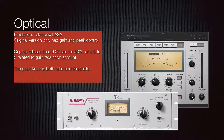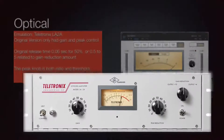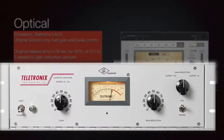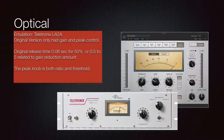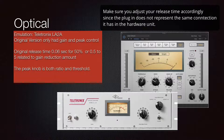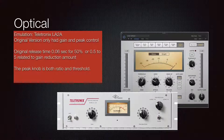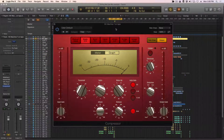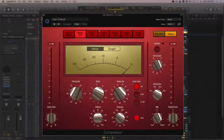The optical compressor is an emulation of the very expensive LA-2A — a hard-to-find and sought-after compressor because it is so smooth. As with all optical compressors, it's a little slow but reacts very smoothly. The original release time of 0.5 to 5 seconds is tied to the gain reduction amount — the more compression, the longer the release. There is no threshold or ratio; your peak reduction knob sets the amount of compression. I'll show comparisons on a kick drum and a vocal.